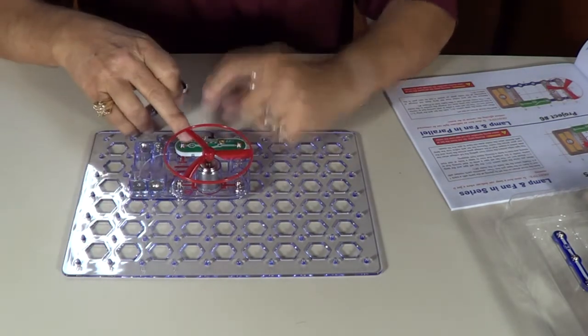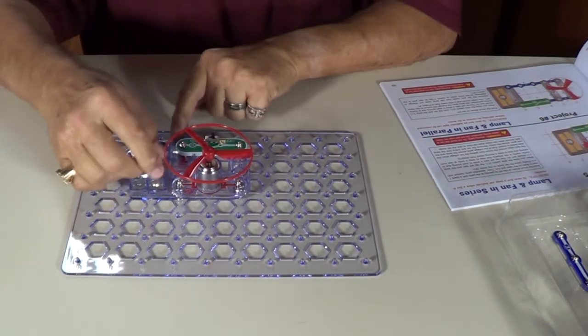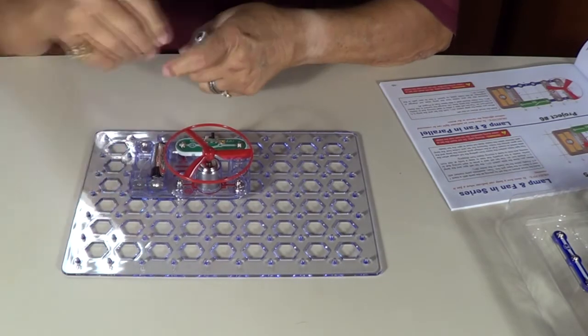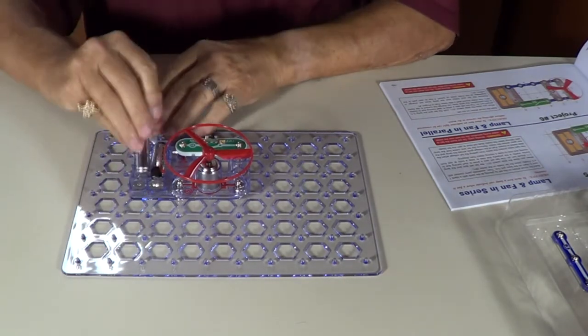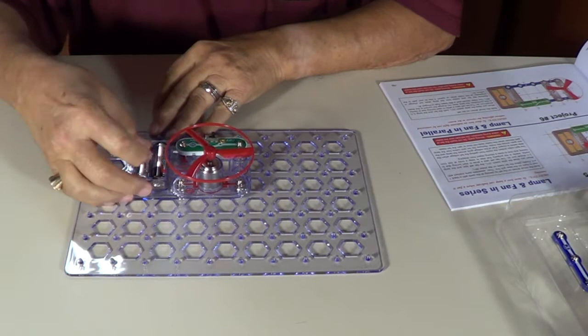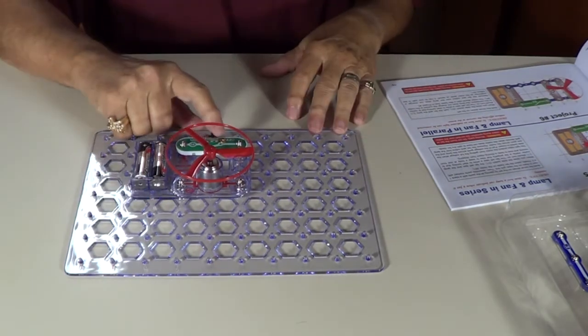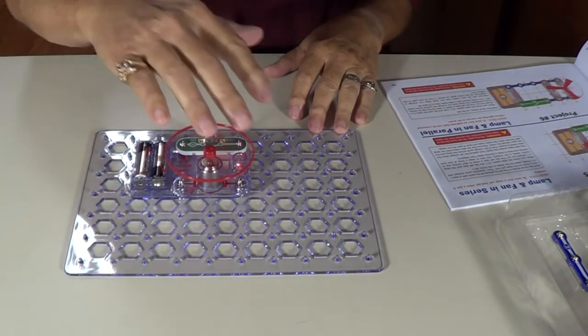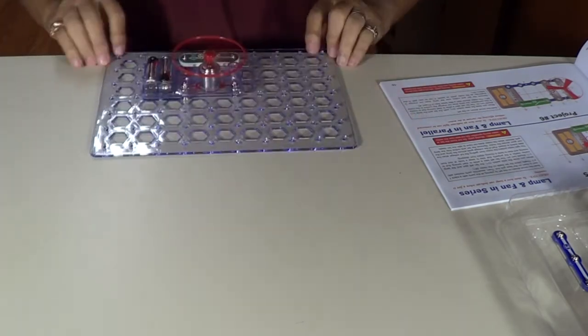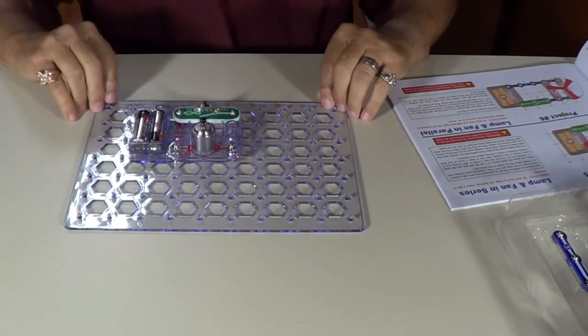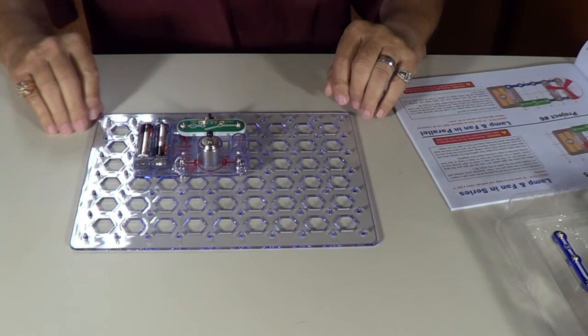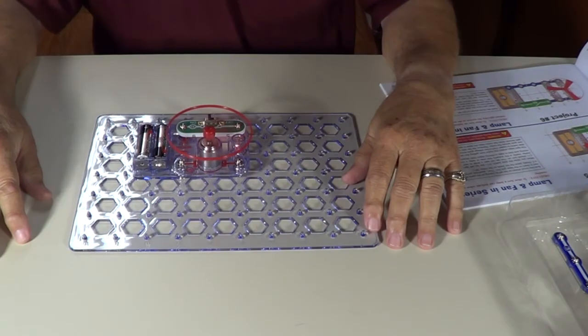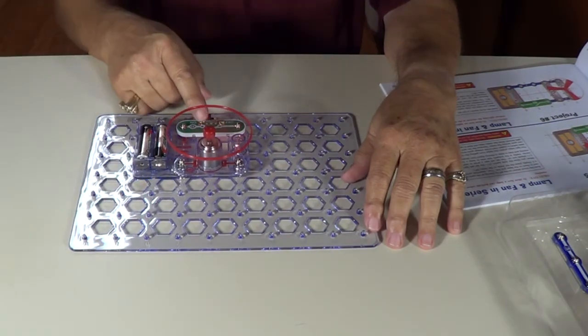Be sure your switch is turned off. Okay, put your batteries in like so, turn the fan on. There you go. So your light comes on too. Uh-oh fan took off didn't it? There it is. When you're through you just turn your switch off. Everything goes off.